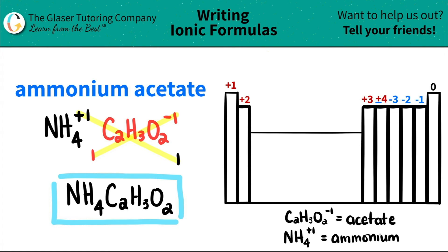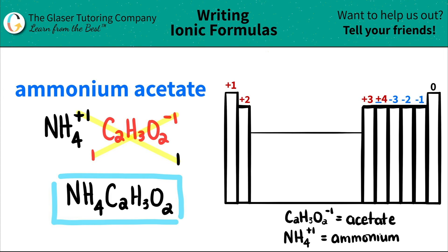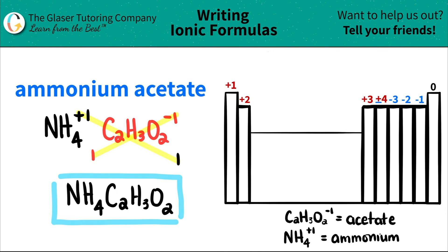Now here's the thing — for anyone asking how this is ionic when there are no metals in here: ionic compounds usually have metals, but they only truly require a transfer of electrons, meaning you have to have a charge. If you have charges, it's an ionic compound. All polyatomic ions will have charges, so they will be part of ionic compounds. That's a little extra side note.